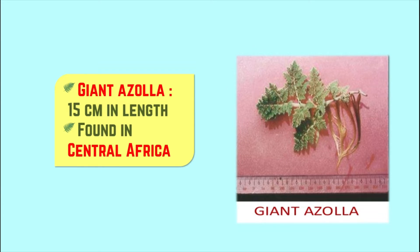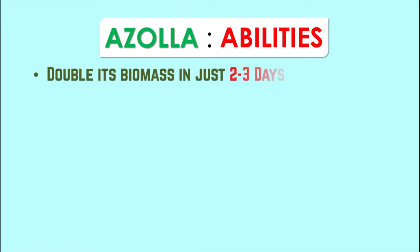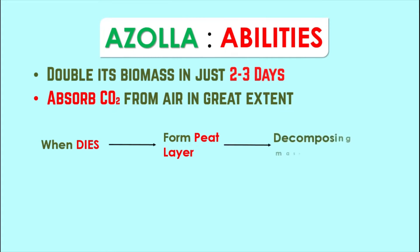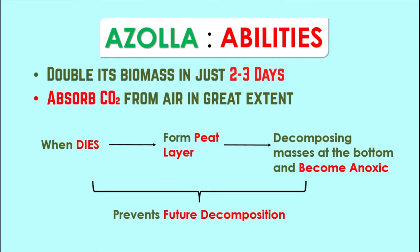The giant Azolla is found mainly in central Africa, while the common species is seen in India. Azolla has the ability to double its biomass in just two to three days. It can absorb carbon dioxide from air in great extent, and when it dies, it forms a pit layer and decomposing masses at the bottom, becoming anoxic, which prevents future decomposition of components in the soil.